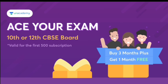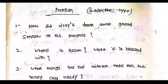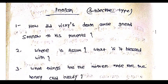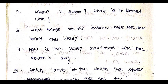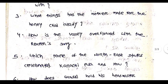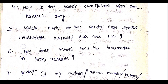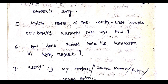If you have a link to the subscribe button, please click on the link in the description. In English, the subject type of question is: How did Vikis cause God's great sorrow to his parents? Where is Assam? What is it blessed with? What things has the mother made for the honey child ready? How is the valley overflowed with the rapper song?